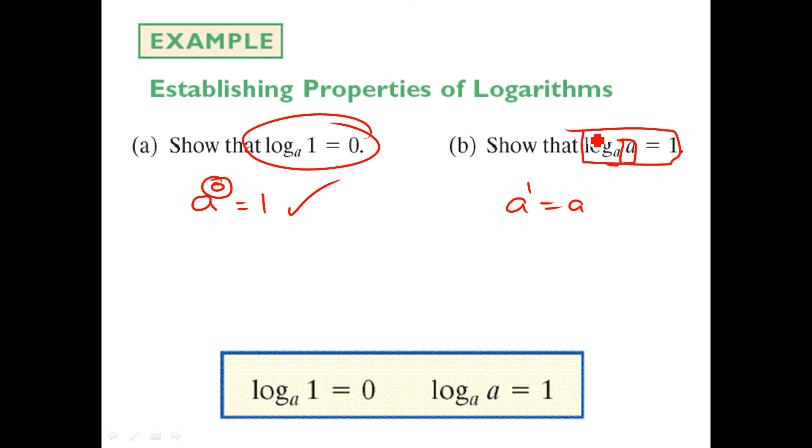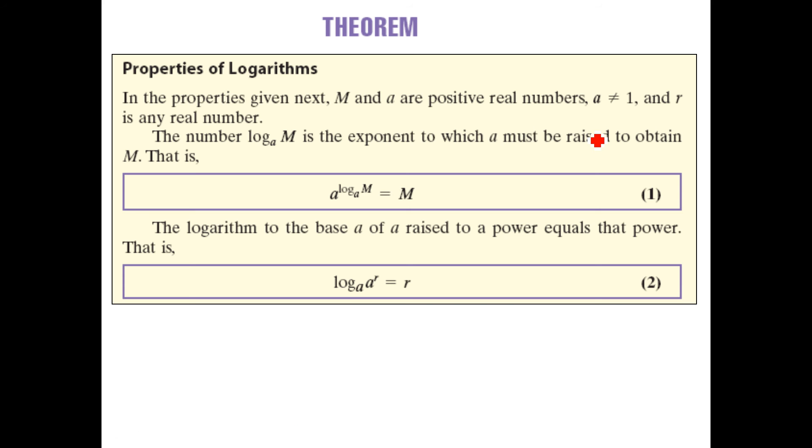There's going to be a number of properties you'll want to start creating a nice list of. Here's the next two: a to the log a of m equals m. If we rewrote that, we could say log base a of m equals the power, which is log base a of m, which works out. Same thing with the second one here. This would be a to the r equals a to the r, so that one checks out as well.